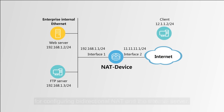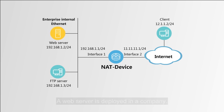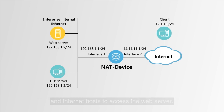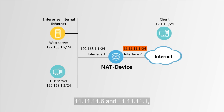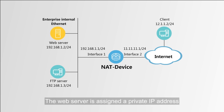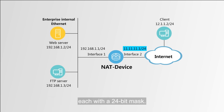Next, let's look at the networking requirements for configuring bidirectional NAT and the internal server. A web server is deployed in a company. The NAT device is configured to allow both the intranet and internet hosts to access the web server. The company is assigned only two public IP addresses: 11.11.11.6 and 11.11.11.1, each with a 24-bit mask. The intranet web server is connected to the internet through the NAT device. The web server is assigned a private IP address 192.168.1.2 and a public IP address 11.11.11.6, each with a 24-bit mask.